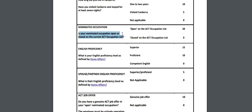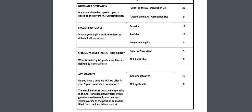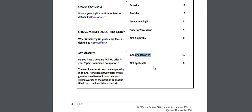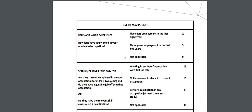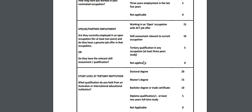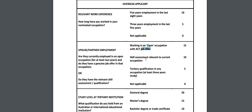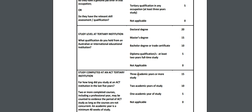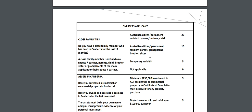For overseas candidates: nominated occupation - open gives 20 points, closed gives 0. English and spouse/partner English scoring is the same as for Canberra residents. If you have a genuine job offer in an open nominated occupation, that gives 10 points. For work experience: 5 years employment in the last 8 years gives 10 points, 3 years employment in the last 5 years gives 5 points. Spouse/partner employment working in an open occupation in ACT gives 15 points; skilled assessment relevant to current occupation gives 10 points; tertiary qualification gives 5 points. Study level and closed family ties scoring is also available for overseas candidates.